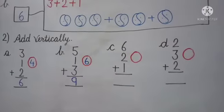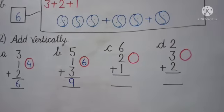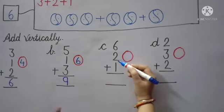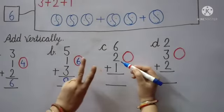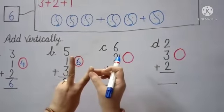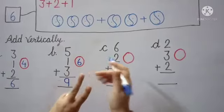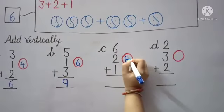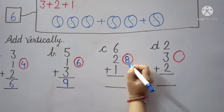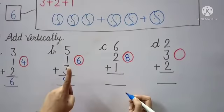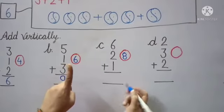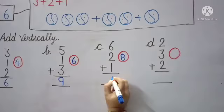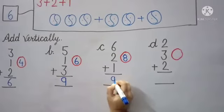Next. Yes. First number is 6 — keep 6 in the mind. Next number is 2, raise 2 fingers. What comes after 6? 7, 8. So here we write number 8. Now keep 8 in the mind. Raise 1 finger. What comes after 8? 9. So here we write number 9.